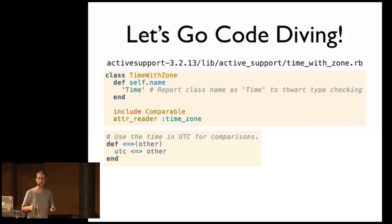And the spaceship operator, really, all it does is it does a comparison, a to b, and it returns negative one, zero, or one, depending on whether they're ordered in less than, equal, or greater than. And in this case, active support time with zone class defines a spaceship operator, which simply passes through to UTC and uses that object's spaceship operator on other. What's UTC? Glad you asked.